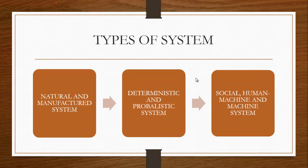Another classification is natural and manufactured systems. Natural systems are created by nature — for example, the solar system and seasonal systems — and do not derive any input from man. The manufactured system is man-made; these are systems created by man, for example rockets, computer systems, and so on.